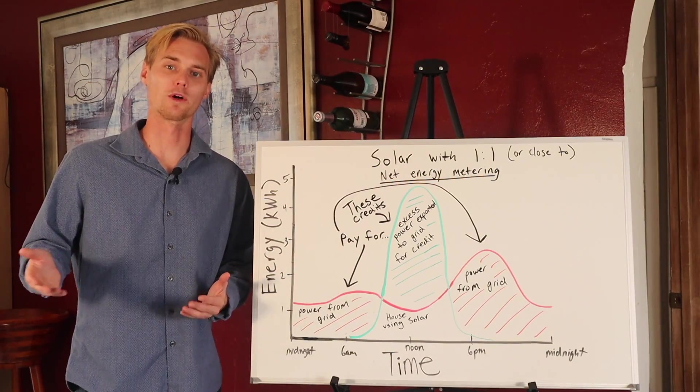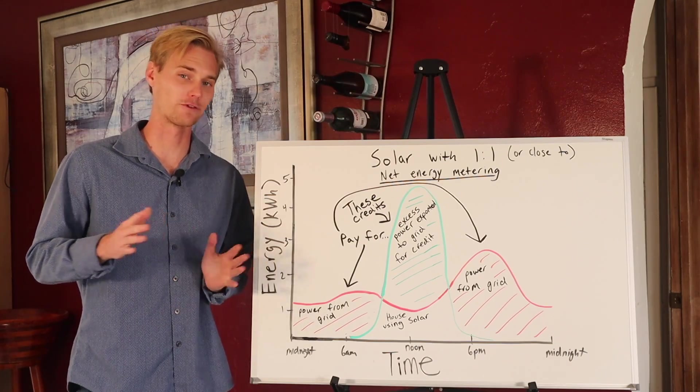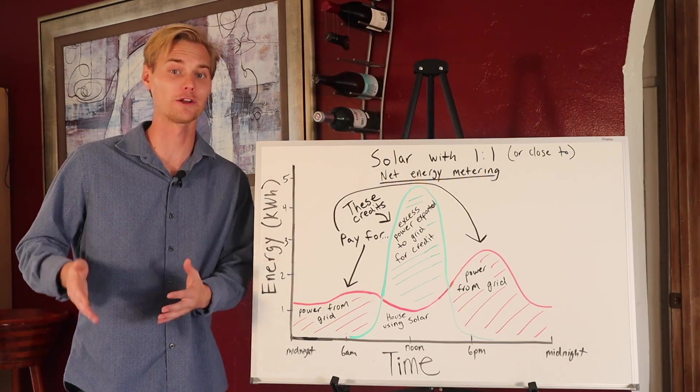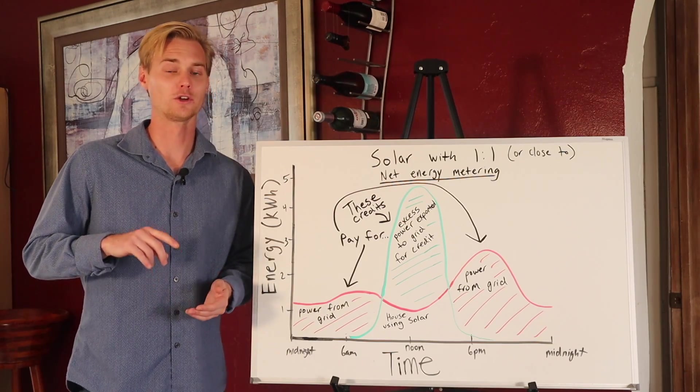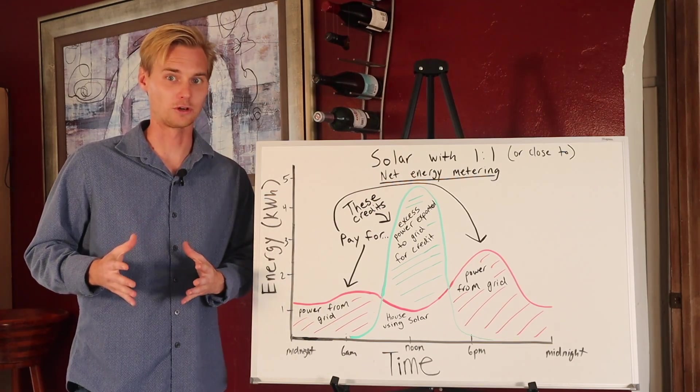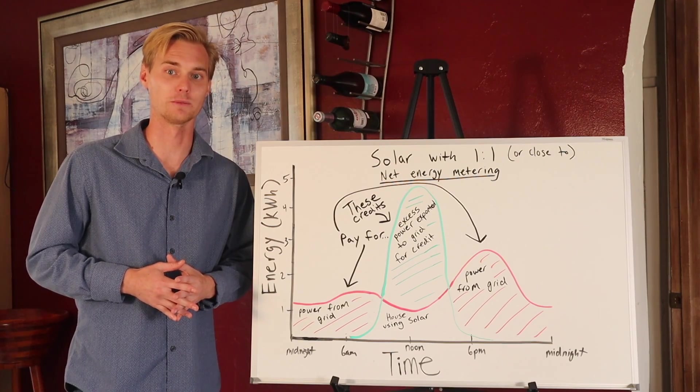Some of the best places with one-to-one net metering agreements are Texas and Florida. Now, not every utility company in these states offer one-to-one net metering, but a lot of them do, so if you're in Florida or Texas, Virginia, North or South Carolina, Pennsylvania, a lot of the East Coast states have really generous one-to-one net metering agreement.